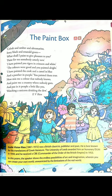The friend replies: 'Paint for me somebody utterly new.' The poet's friend is asking for something very new and very different — utterly means to an extreme degree — something totally different from what has been painted before.